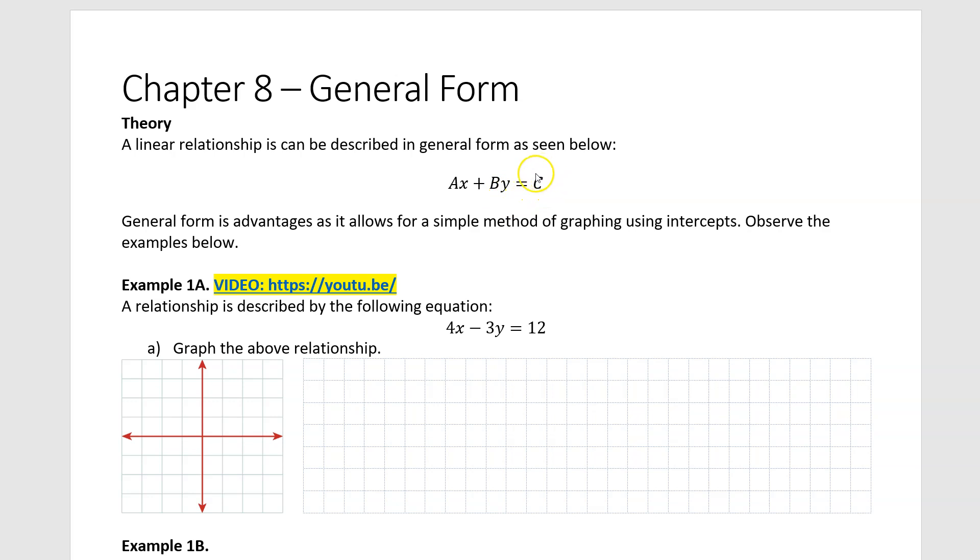Similarly, the C is always on the right-hand side. Now, the power of this form is such that it allows us to graph linear relationships by easily deducing the intercepts, so the x and the y intercepts. Another really great thing about this form is it allows us to express linear relationships without the need to use fractions. So everything can be expressed as a whole number.